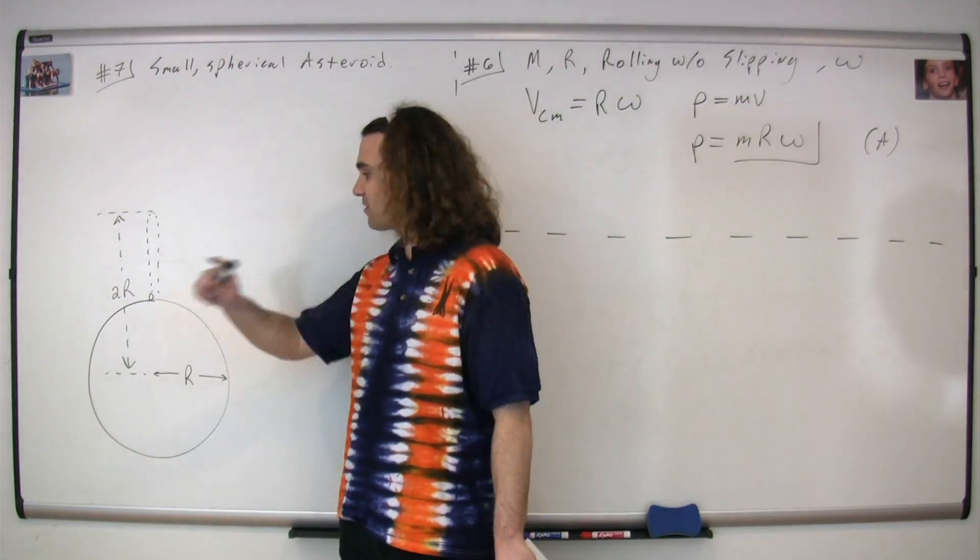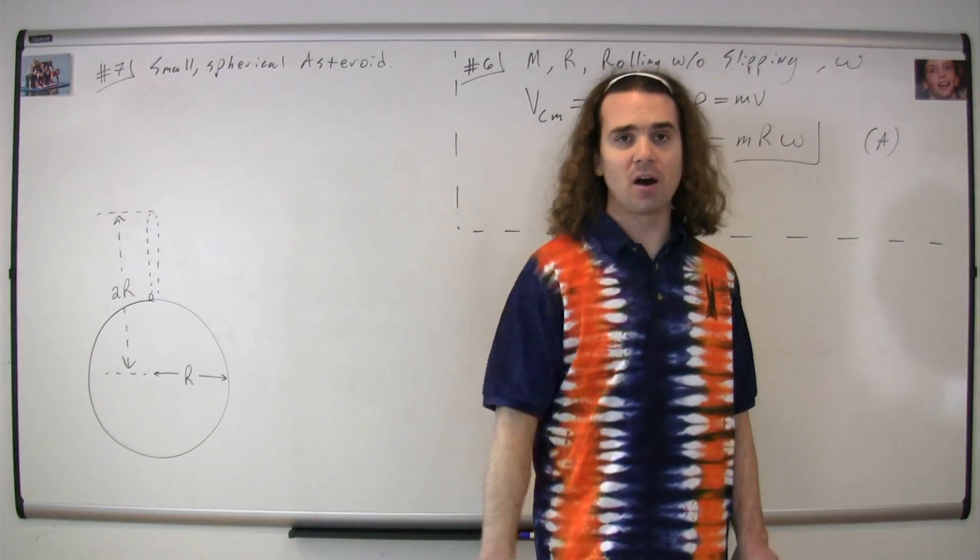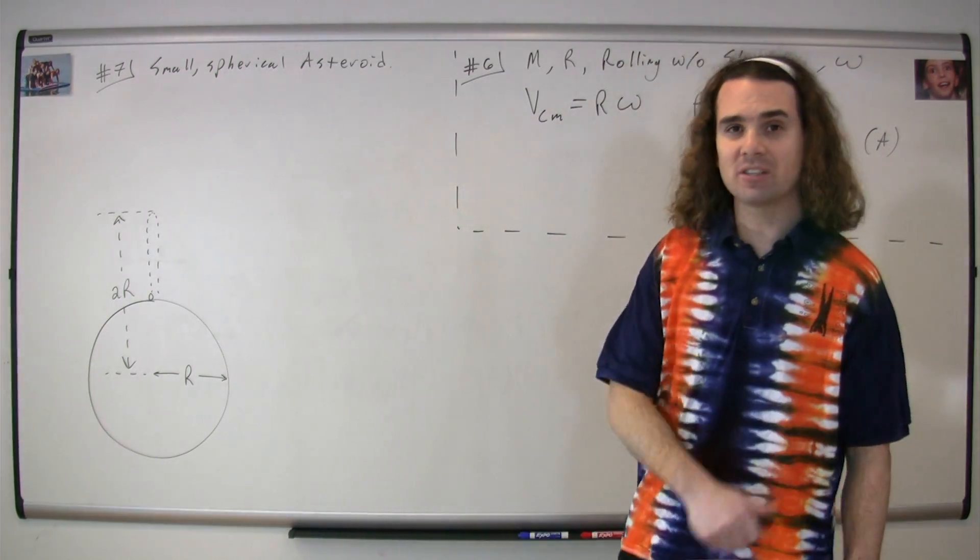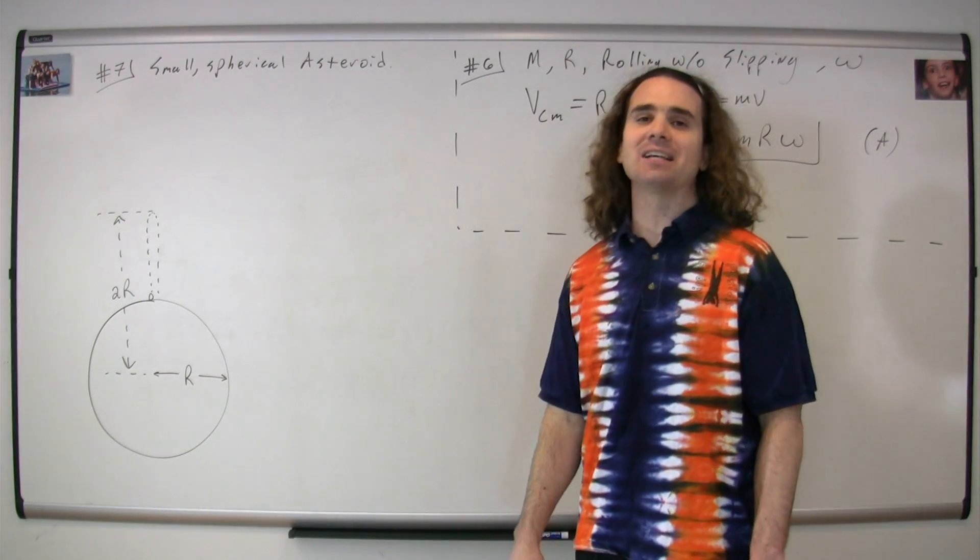Therefore, the total distance from the center of mass of the asteroid, when it's at the top of its path, will be 2r. The question is, what forces, if any, act on the ball as it's moving upward?